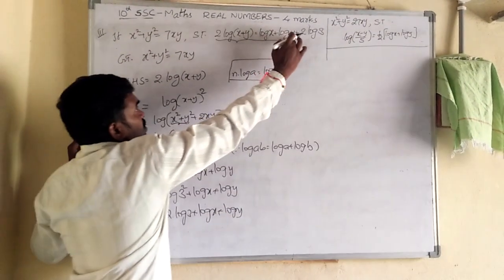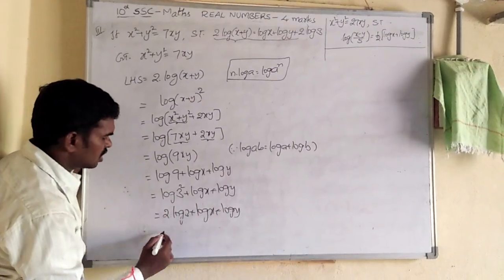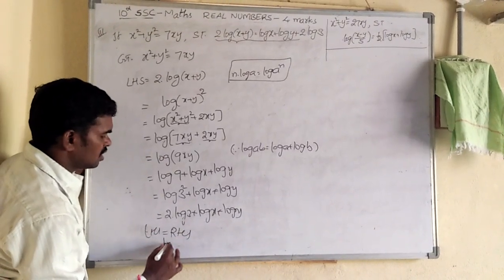So got it RHS? Log x plus log y plus 2 log 3. Log x plus log y plus 2 log 3. So we got the solution. RHS. So let's just put RHS hands. Proved.